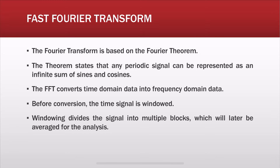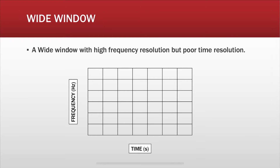Before conversion, the time signal is windowed. Windowing divides a signal into multiple blocks which will later be averaged for the analysis. There are two types of window: a wide window and a narrow window.